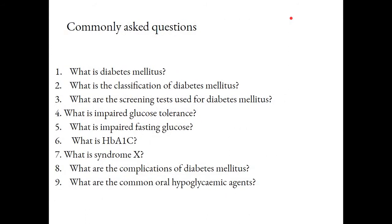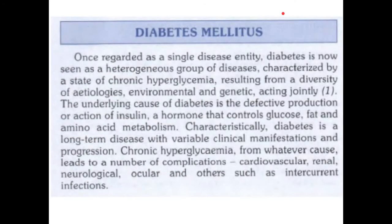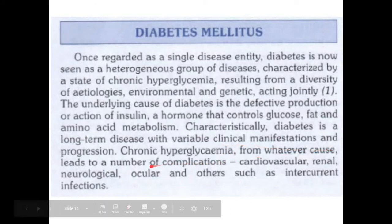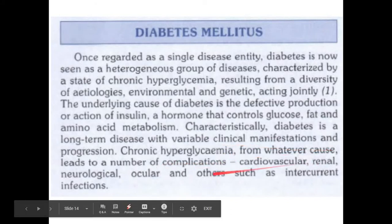Now, commonly asked questions when presenting a clinical social case proforma of diabetes mellitus. What is diabetes mellitus? Diabetes mellitus is a state of chronic hyperglycemia caused by defective production or action of insulin, which in the long term results in complications including cardiovascular, renal, neurological, ocular, and others such as intercurrent infections. It is a heterogeneous group of diseases.